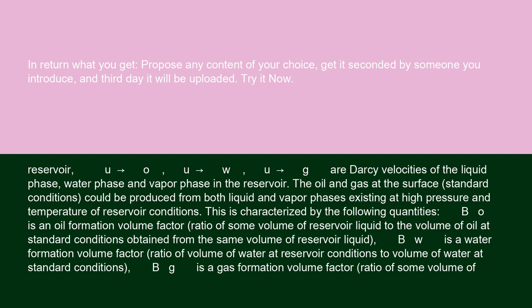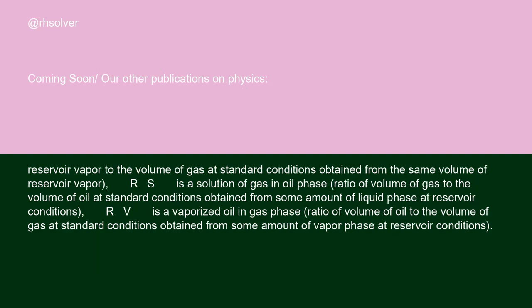Bo is an oil formation volume factor, the ratio of some volume of reservoir liquid to the volume of oil at standard conditions obtained from the same volume of reservoir liquid. Bw is a water formation volume factor, the ratio of volume of water at reservoir conditions to volume of water at standard conditions. Bg is a gas formation volume factor, the ratio of some volume of reservoir vapor to the volume of gas at standard conditions obtained from the same volume of reservoir vapor.